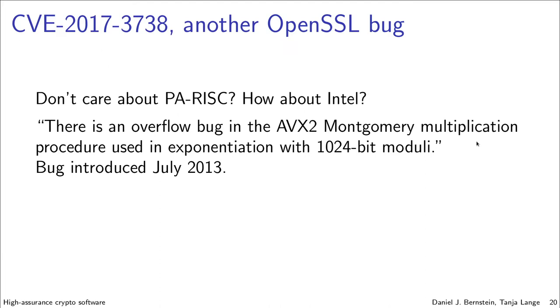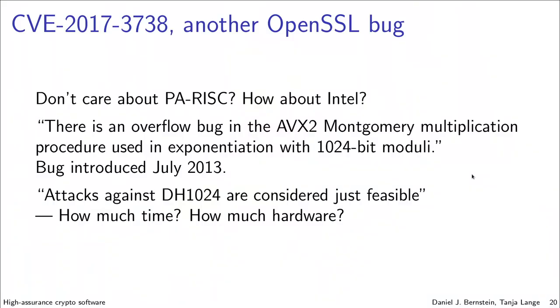I don't think anyone is trying to preserve PA-RISC. At some point Intel made this instruction set. Using AVX2, there is an implementation of 1024-bit modular exponentiation. And there was a bug in 2013 — an overflow bug. What about attacks on Diffie-Hellman at 1024 bits? Now much more likely.